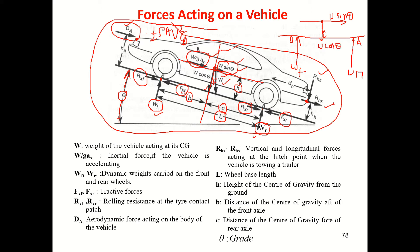The inertia load (W/g)×ax is acting at height h. At height ha, the drag load Da is acting, and a certain distance along the beam is assigned to it.